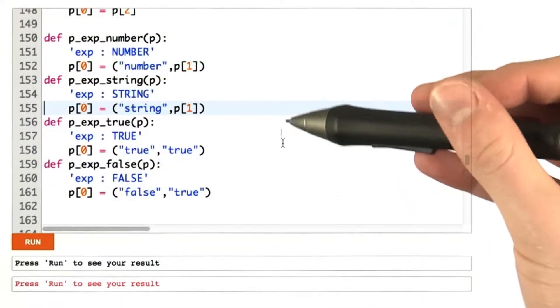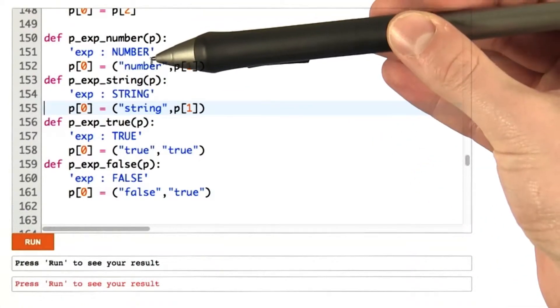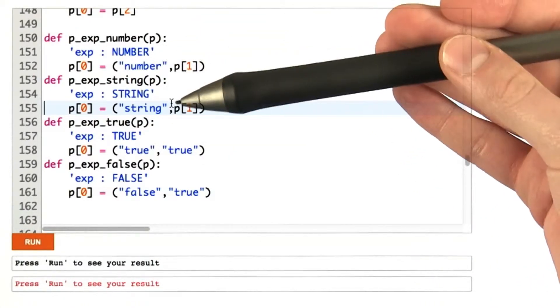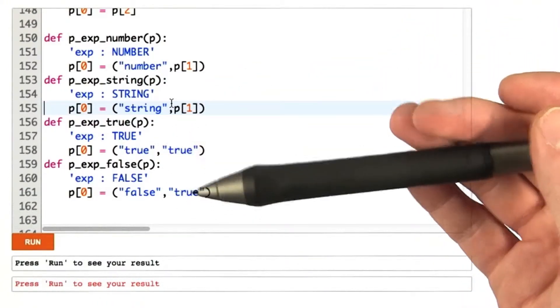And now I have four rules for some of our literal values. If we have a number, we're going to say number, and then the contents of that. String, just simply say the word string. If we've matched true or false, we're going to return the specified tuples.